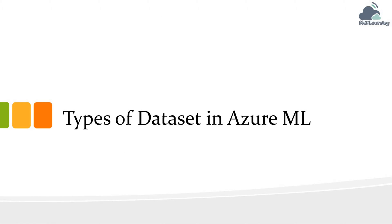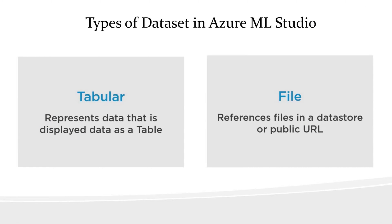Let's talk through dataset types in Azure Machine Learning Studio. First, you have the tabular data type — this means uploading data in tabular format or having the ability to represent it in a table format. Examples of file types include Parquet files, CSV files, JSON files, TSV files, and more. When you upload the data, Azure Machine Learning will present it in a table format.